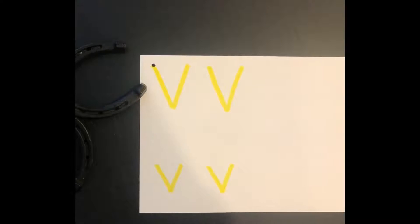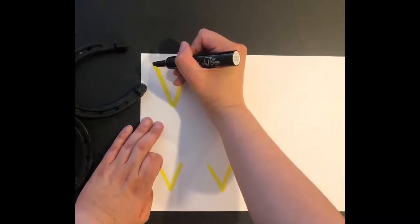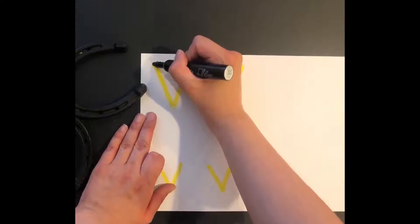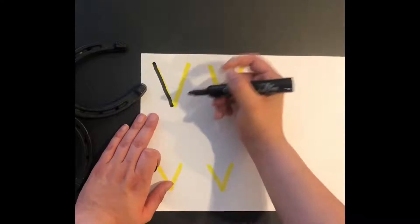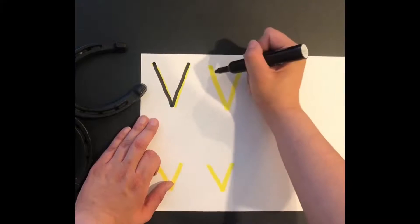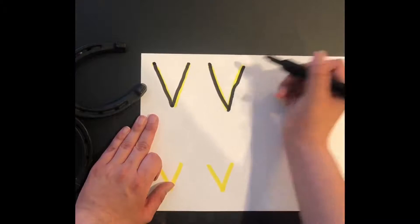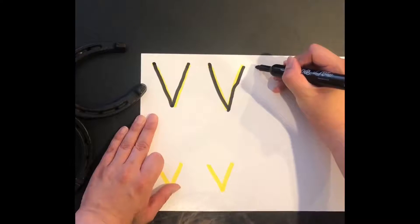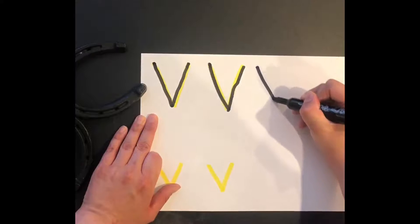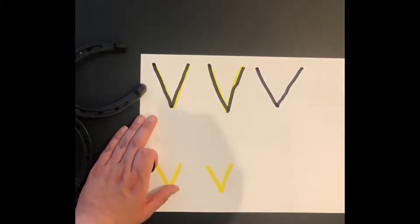So to write the letter V on lined paper, when you're writing an uppercase V, you're gonna start at the very top, and you're gonna slant your line right down to the bottom line, and then you're gonna slant back up. So you're gonna start at the top, slant right to the bottom, and then slant back to the top once again. At the top, slant right, and once you hit the bottom, you're gonna slant back up.